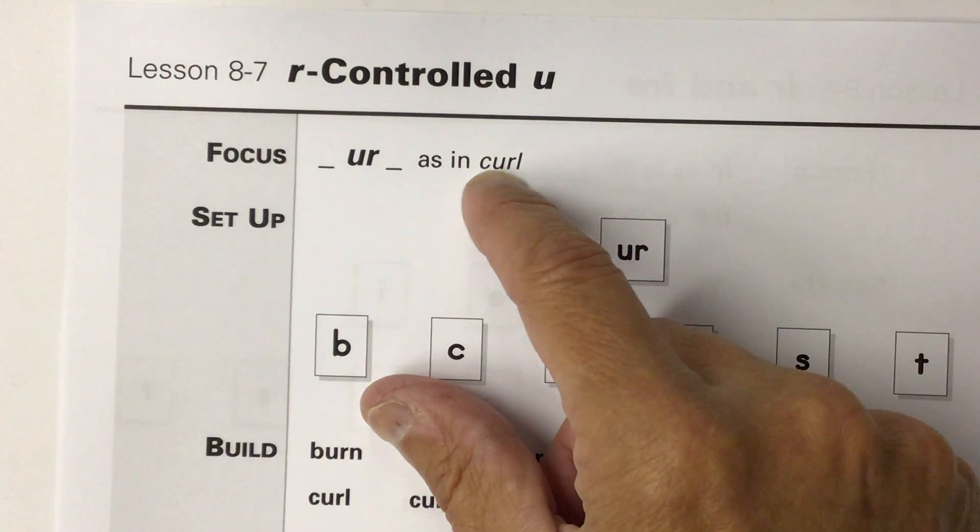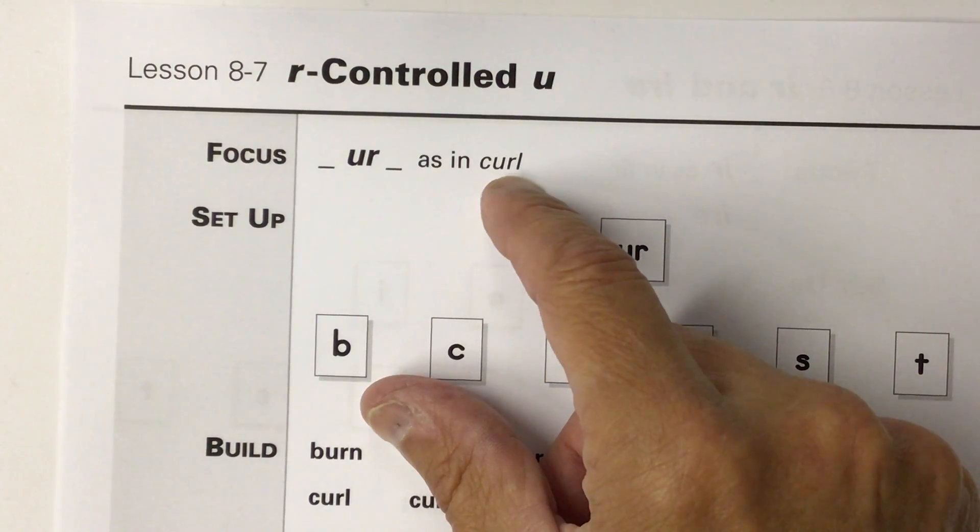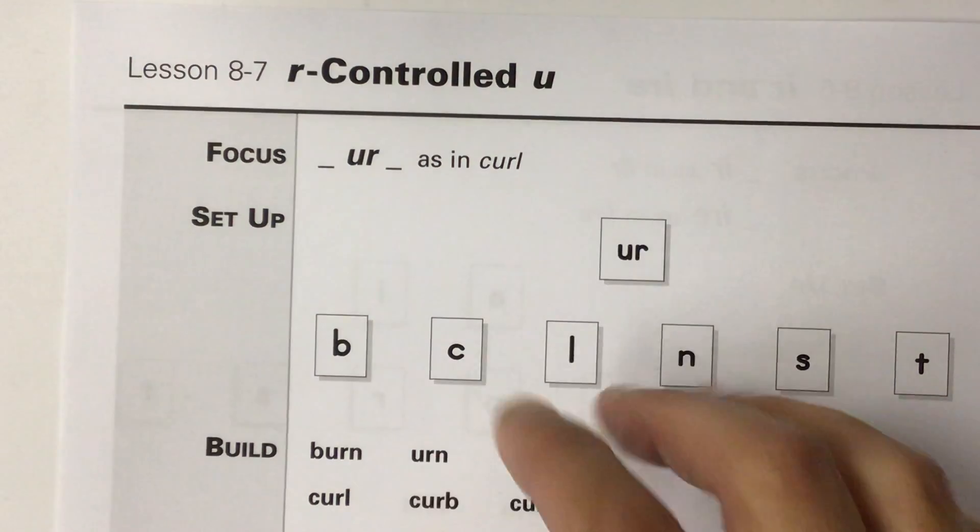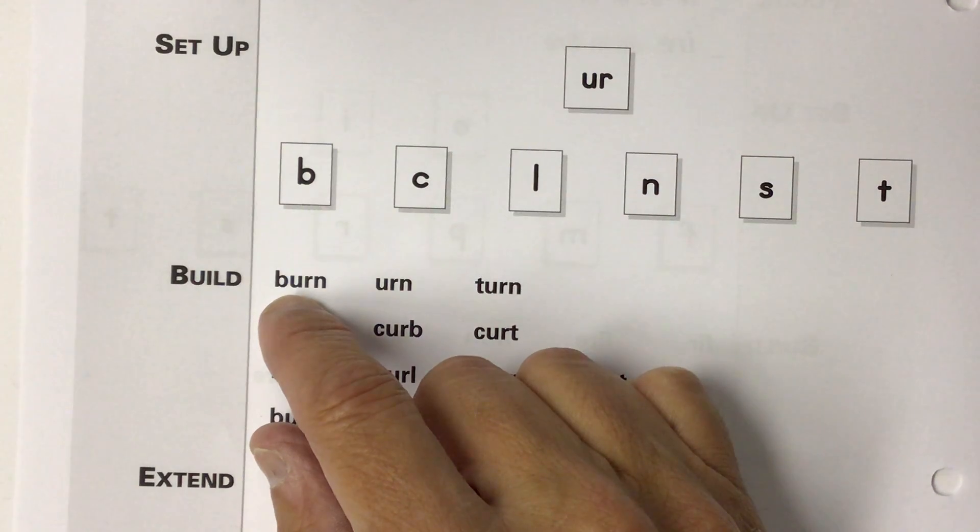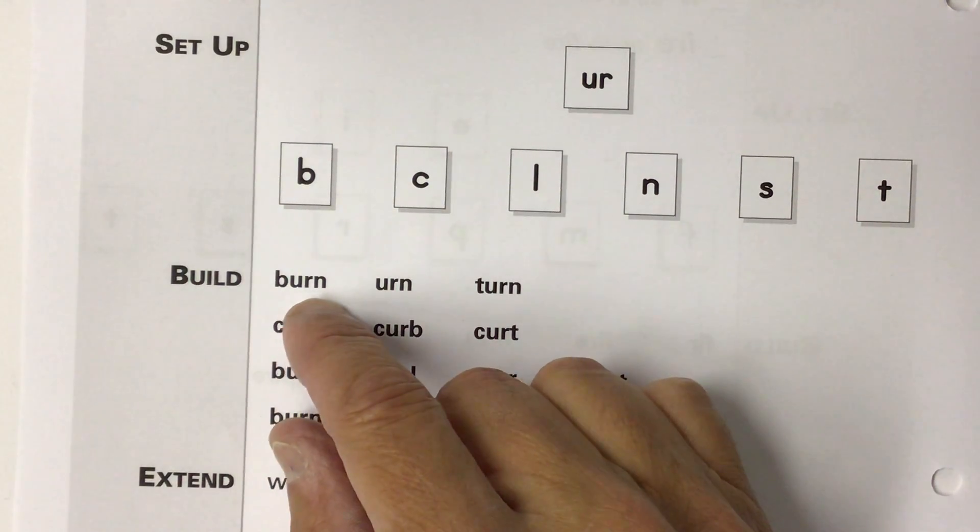Uh, uh. So this says curl. Curl. Let's take a look at some more words that use the bossy R with the letter U before it. This says burn. Okay, now you say it.